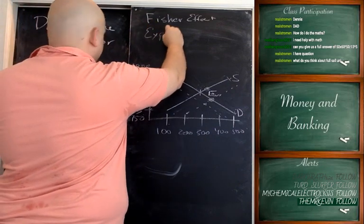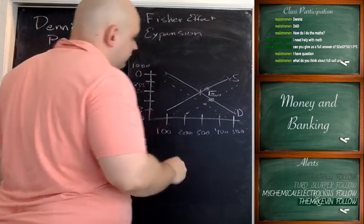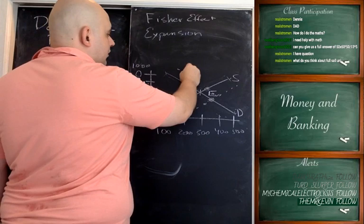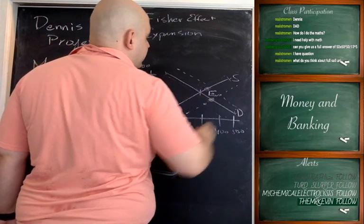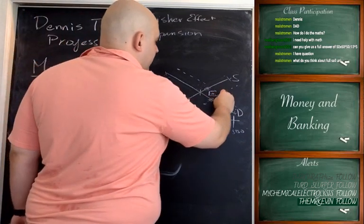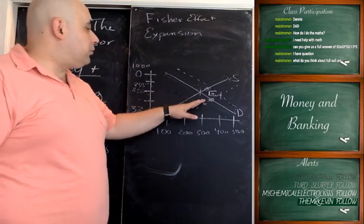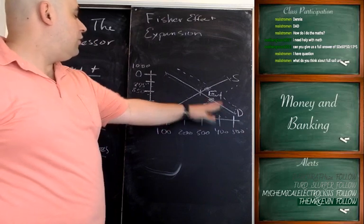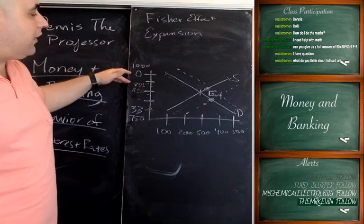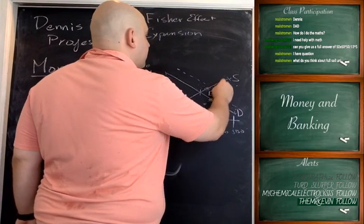In an expansion, the supply of bonds shifts to the right and so does the demand for bonds. Depending on which one is pulling harder — if supply shifts faster than demand, we have rising interest rates; if demand shifts faster than supply, we'd have dropping interest rates — but either way we get an increase in the supply of available bonds.